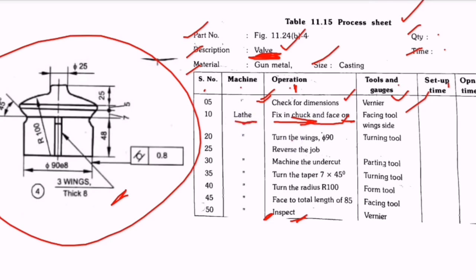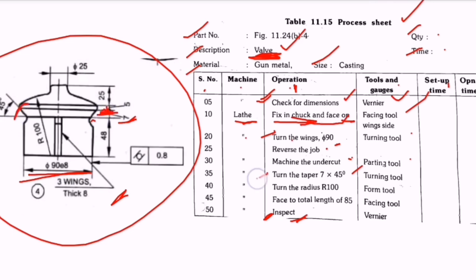Next, turn the wings to a diameter of 90 — this is the 90 diameter — using a turning tool on the lathe machine. Next, reverse the job. After reversing, measure the undercut using a parting tool. Then turn the taper of 7 × 45 degrees — the gap is 7 and the angle is 45 degrees — using a turning tool.